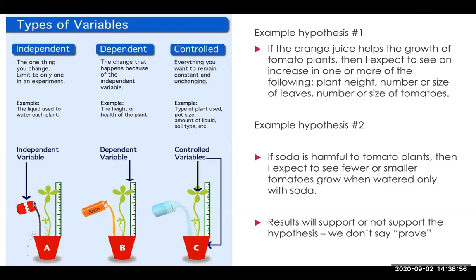If we look at plant growth as our example, maybe we ask ourselves whether water is the best liquid to use for growing plants. You might decide to test soda, orange juice, and water and compare to see if there are any differences in growth. Your control variable would be water and your dependent variable would be the height, width of the plant, how many leaves it has, does it produce as much fruit, how big that fruit is — et cetera.